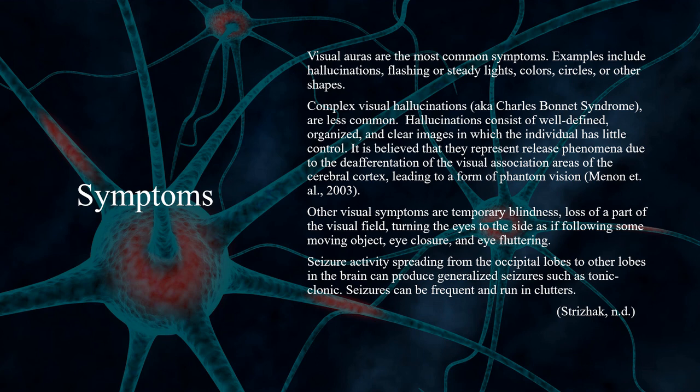Seizure activity spreading from the occipital lobes to other lobes in the brain can produce generalized seizures such as tonic-clonic. Seizures can be frequent and run in clusters.